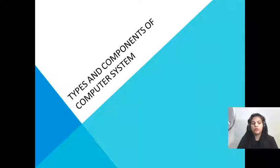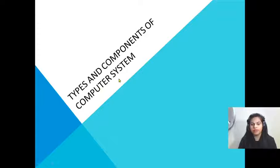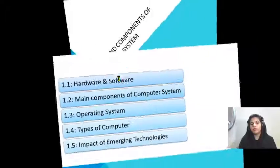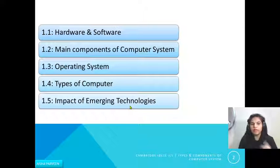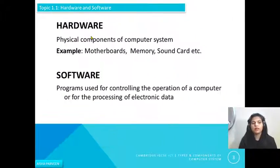Hello students, today we are going to start IGCSE ICT chapter number one: Types and Components of Computer System. In this chapter we have further topics — hardware and software, main components of computer system, operating system, types of computer, and impact of emerging technologies. But in this video we will discuss only hardware and software.